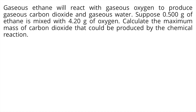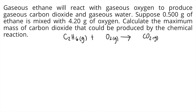The first thing you're going to do to answer this problem is to write a balanced chemical reaction. According to the first sentence of the problem, our reactants are gaseous ethane — C2H6 gas — plus gaseous oxygen, O2 gas. The products are gaseous carbon dioxide, CO2 gas, and gaseous water, H2O gas.